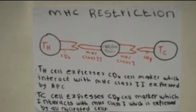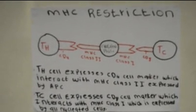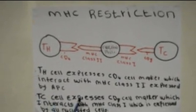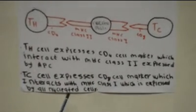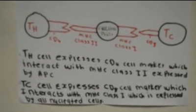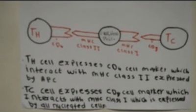There are many APCs. There is a TC cell that expresses CD8 cell marker, which interacts with MHC class 2, which is expressed by all nucleated cells.